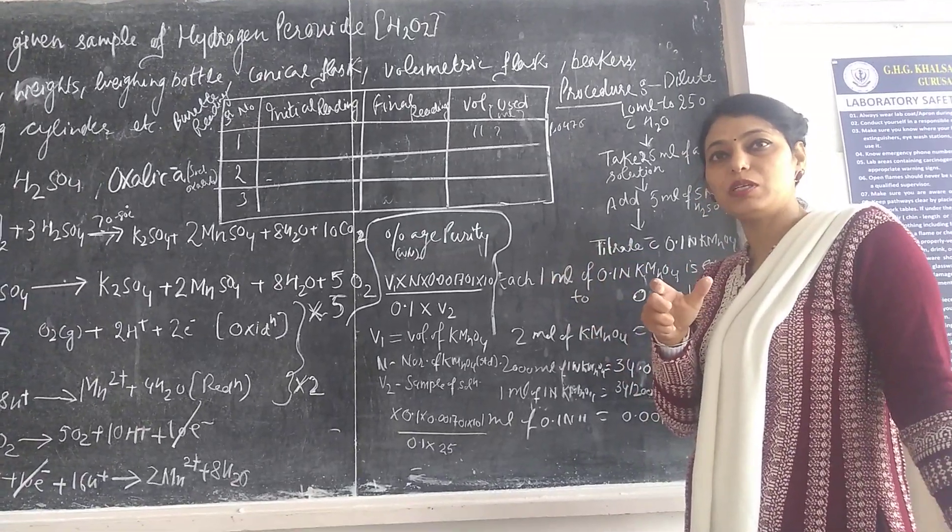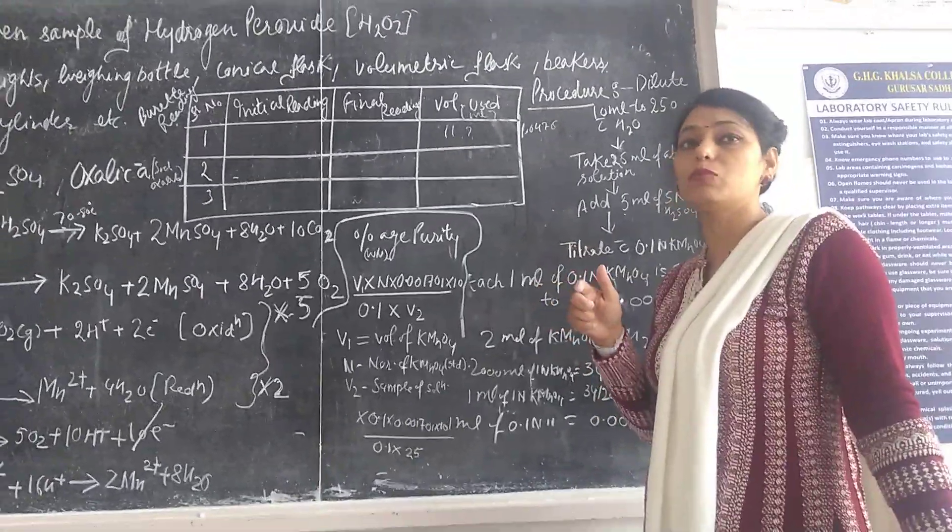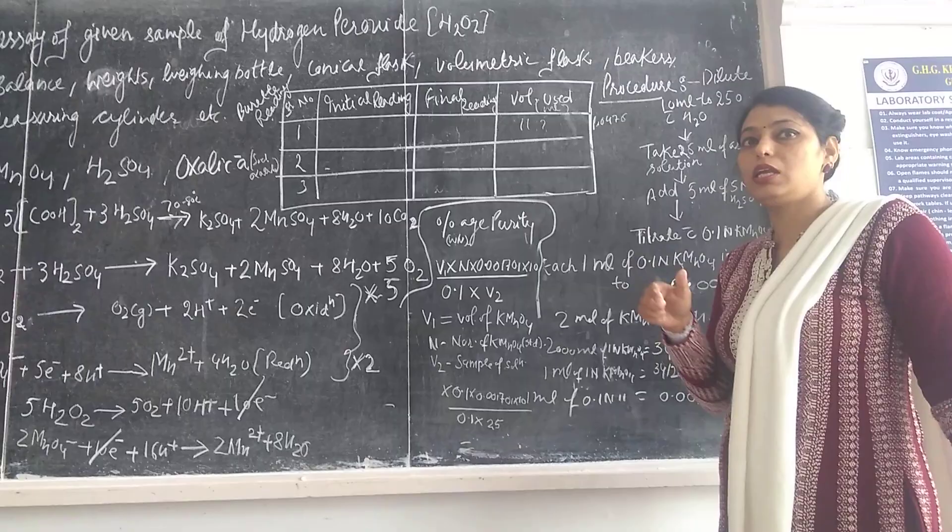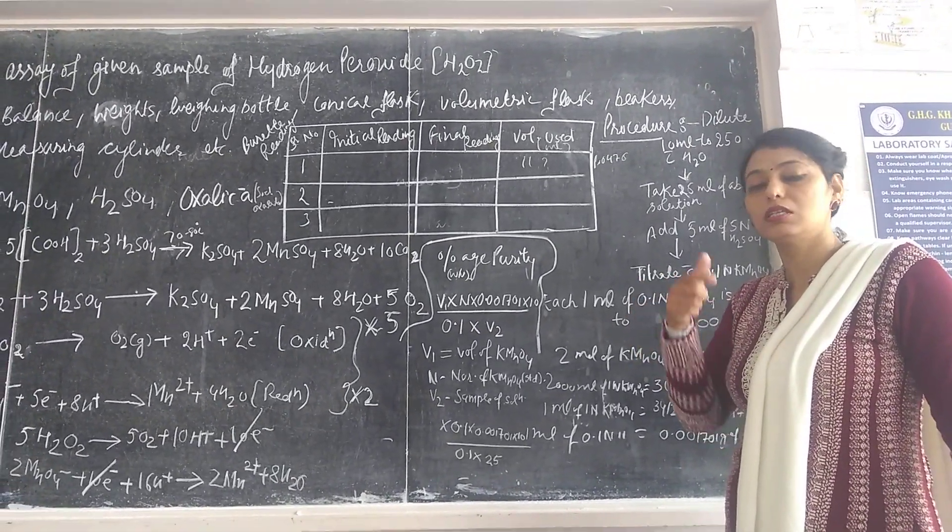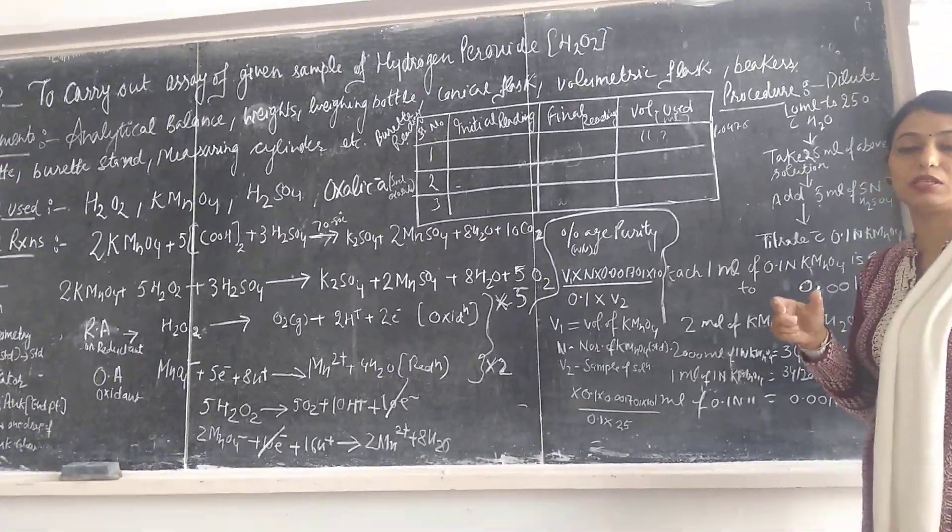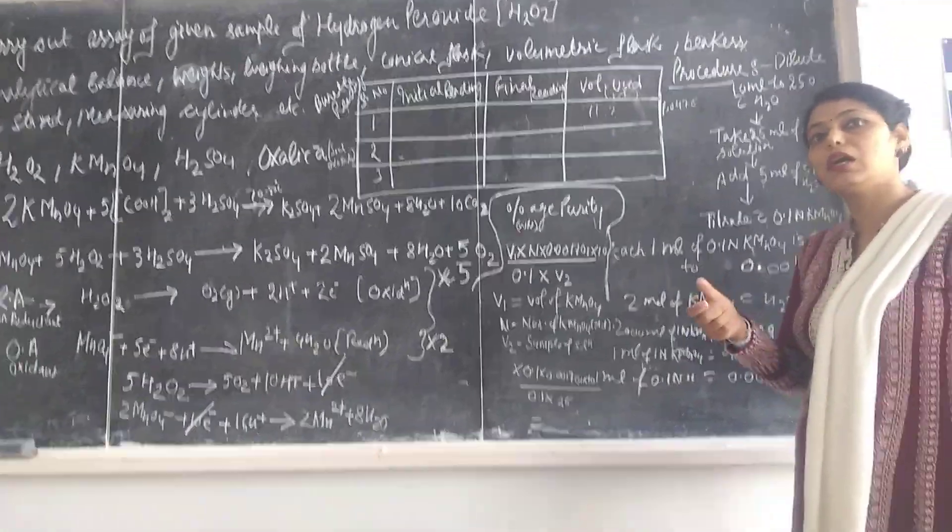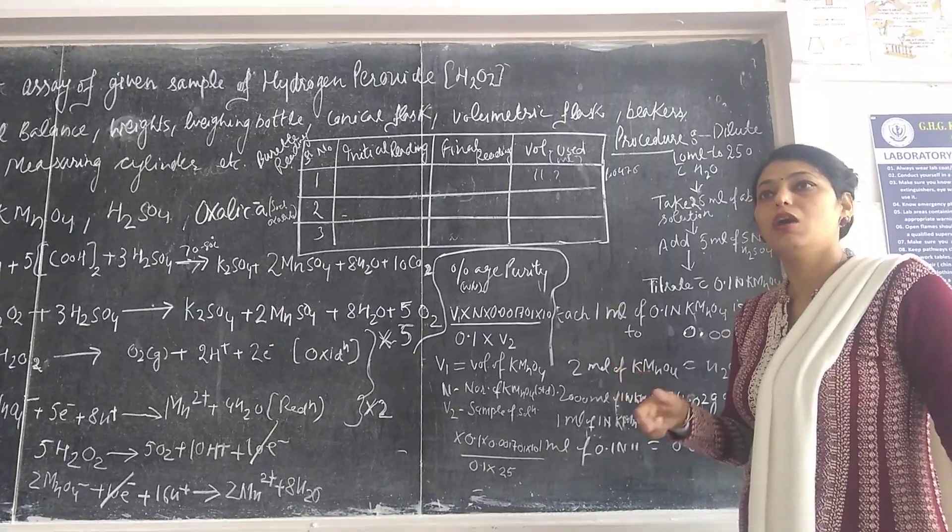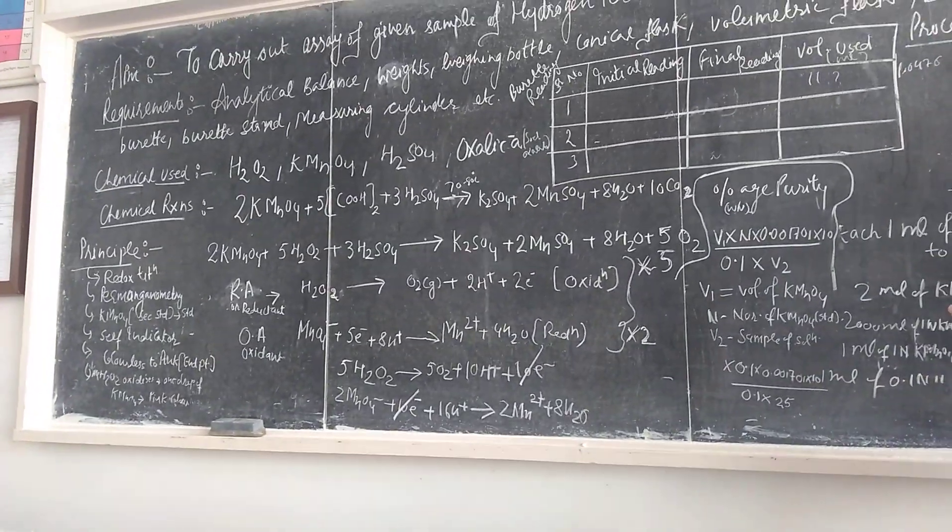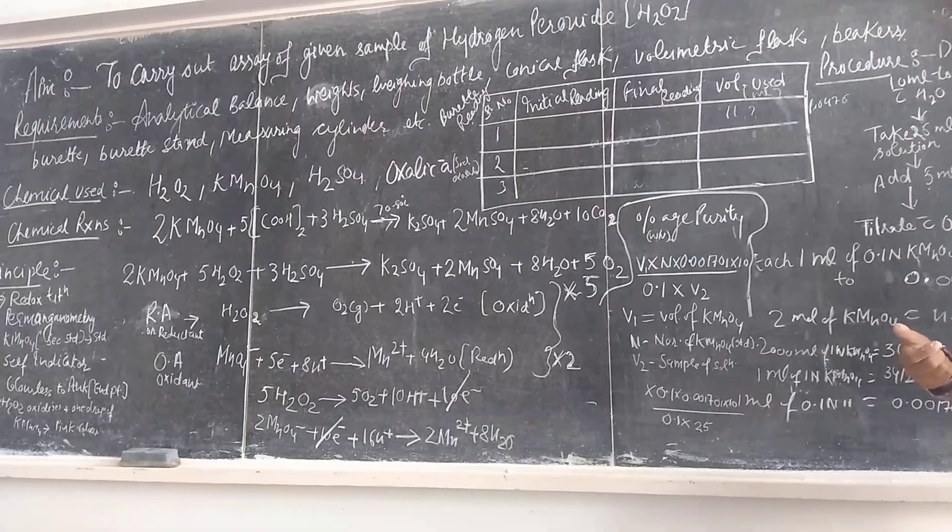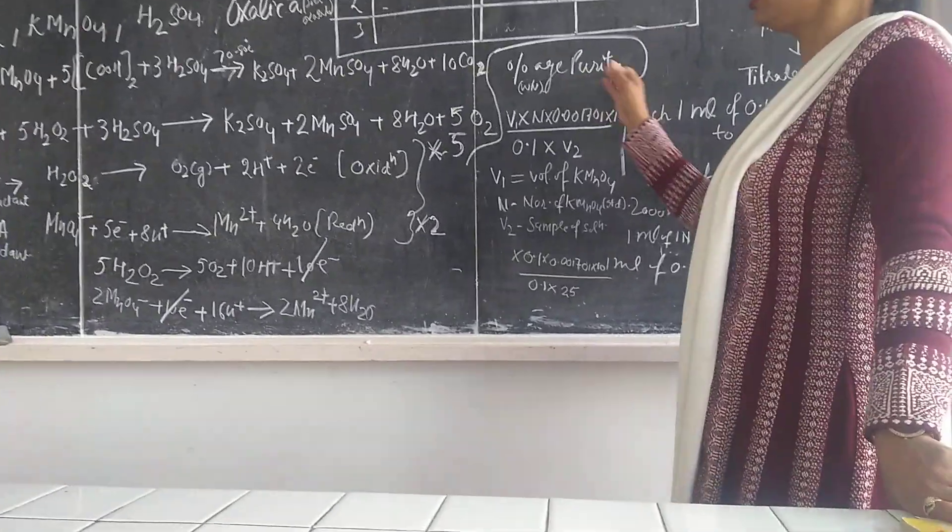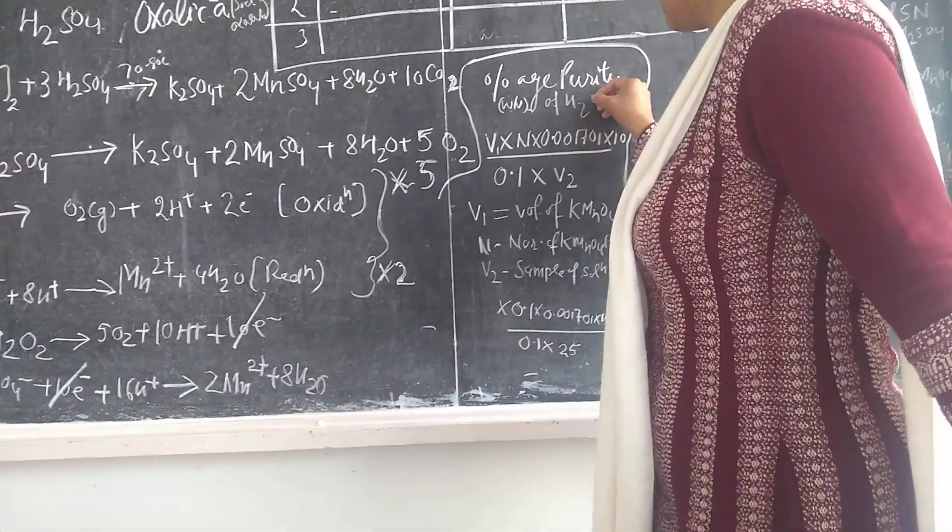The limit according to our standard, i.e. Indian Pharmacopoeia, is not less than 5% weight by volume and not more than 7% weight by volume. This is according to Indian Pharmacopoeia standard. It is not less than 5% and maximum is 7%. This depends upon your practical handling.